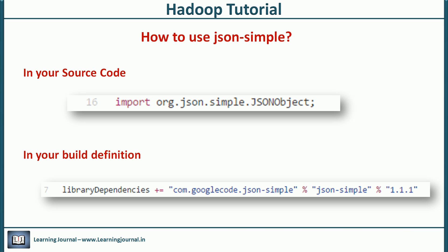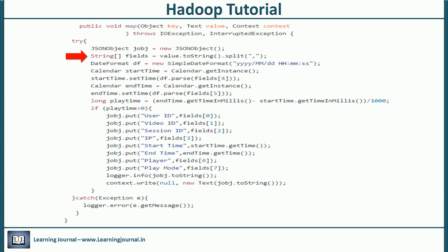Let's see what we are doing in the map function. We read each record and split it over the comma, as we are doing in the earlier examples. Then we convert the record into a JSON object. Finally, we write the JSON to the context.